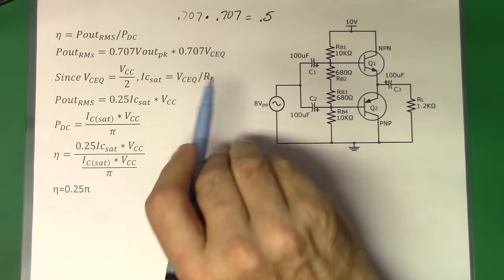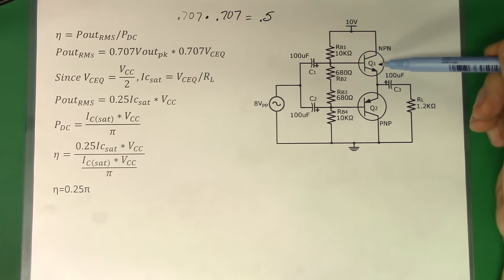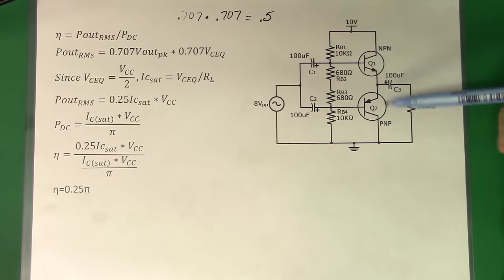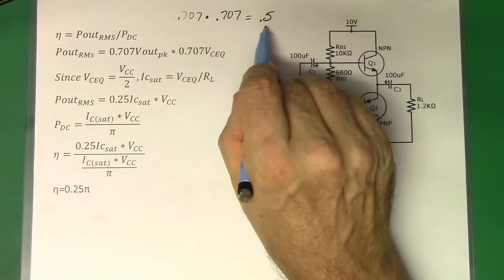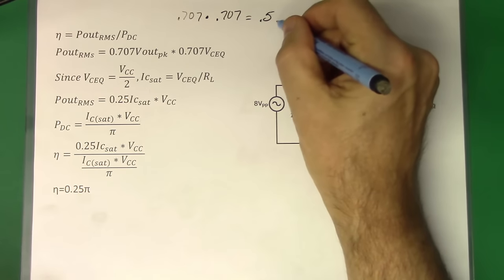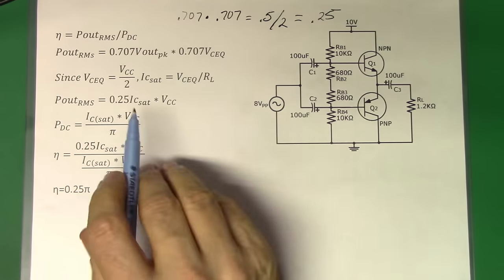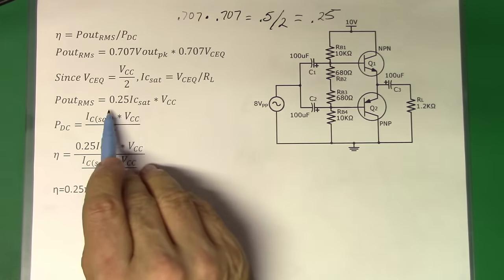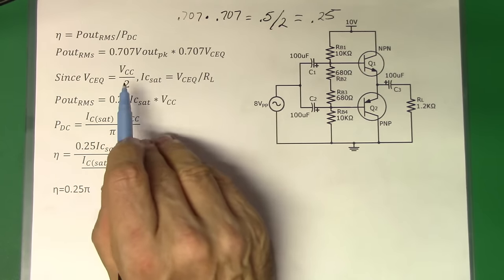The funny thing about this circuit is that the value for VCEQ — the voltage from collector to emitter at the Q point — is only going to be, at a maximum, half of VCC because these transistors have to split that voltage. When we split that voltage, that 0.707 times 0.707 gives us 0.5, and we split that power, so we end up dividing that 0.5 by 2. We end up with a maximum of 0.25 as a multiplier. So we're plugging in 0.25, which came from 0.707 times 0.707 giving us 0.5, then dividing by 2 because we're only using half of the value of VCC.